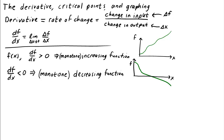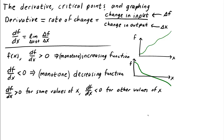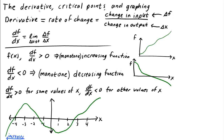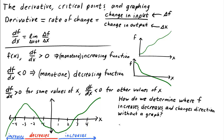The graph of a monotone decreasing function might look like this. Of course, a function could have more complicated behavior than a monotone increasing or decreasing function. The function might increase in some places and decrease in others. The function graphed here increases for x less than negative 3, but then at x equals negative 3, it turns around and starts decreasing. It decreases over the interval negative 3 less than x less than 1, then turns around again at x equals 1, and increases from then on. It's easy to see where the function increases, decreases, and changes direction from the graph. But how do we determine these features of a function without a graph?